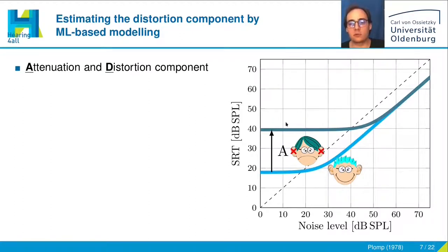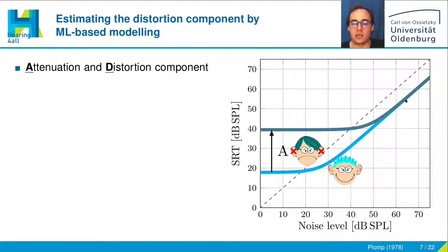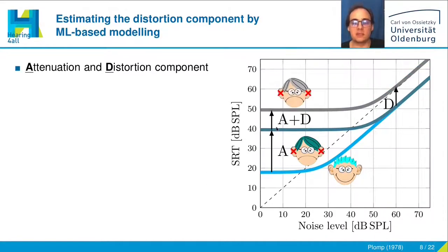The same holds true for people with an A component of hearing impairment — an increased absolute hearing threshold — which limits their ability to understand speech in a calm environment, but they can get as good as normal hearing listeners in noisy environments. People who suffer from a distortion component of hearing impairment have more difficulties understanding speech both in quiet and in noisy environments.